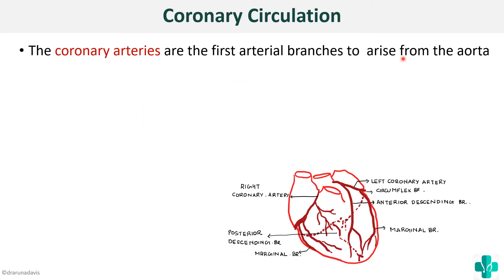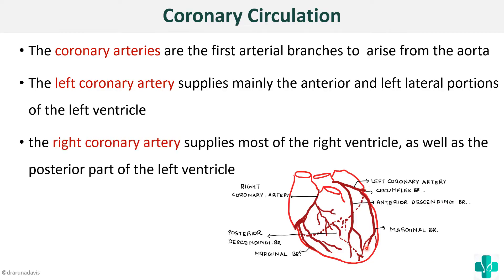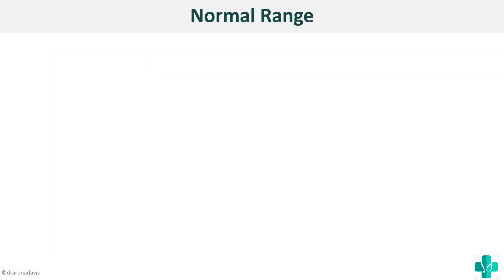The coronary arteries are the first arterial branches to arise from the aorta. The left coronary artery supplies mainly the anterior and left lateral portion of the left ventricle, while the right coronary artery supplies most of the right ventricle as well as the posterior part of the left ventricle. In physiology, you just need to write about the physiological anatomy — you don't need to elaborate on all the branches as you would in anatomy.